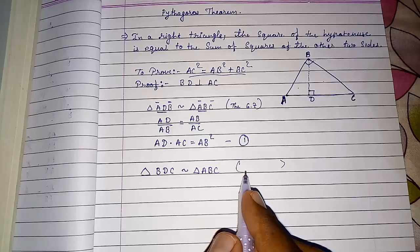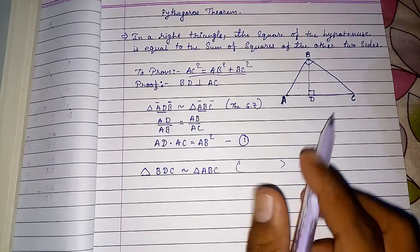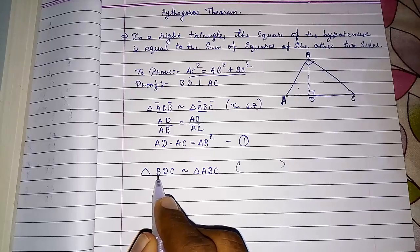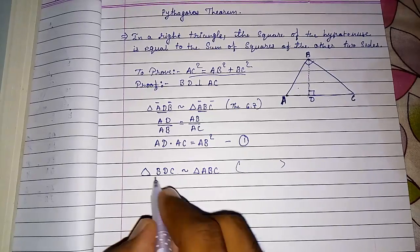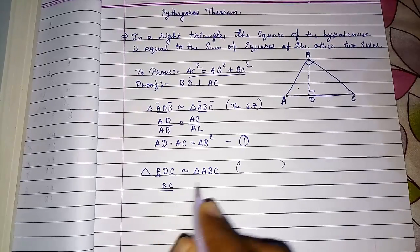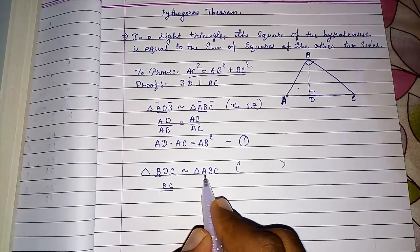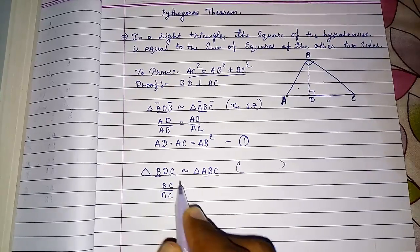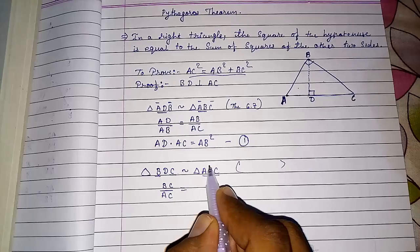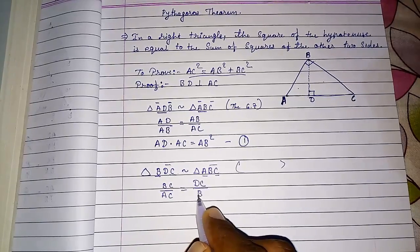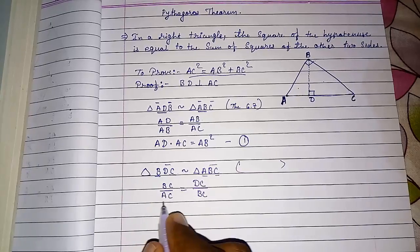So if they are similar, what we can do? Now I am taking - I want BC in both these cases. So first I am taking this BC. BC by AC equals - now I want this BC - so DC by BC.